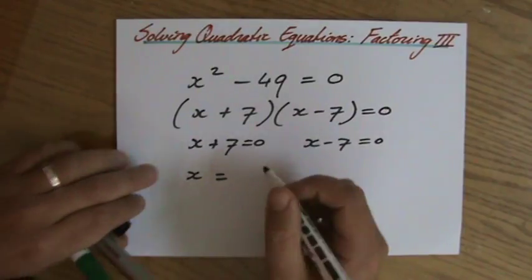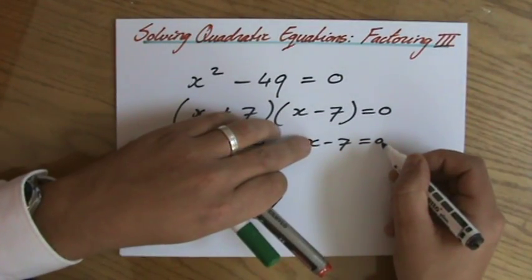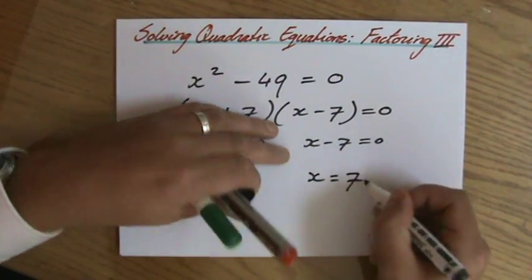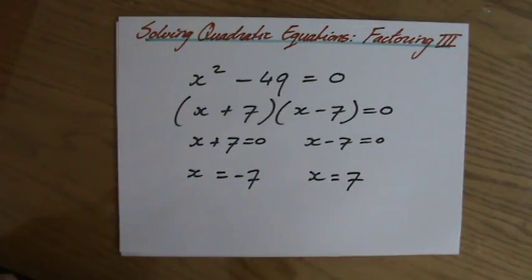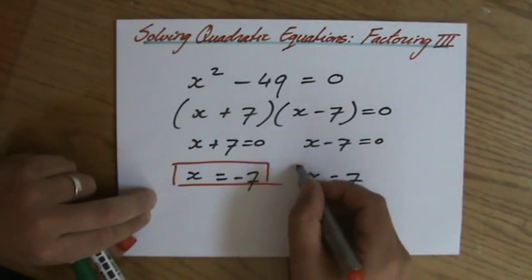So I have a look at this linear equation, x equals minus 7. I have a look separately at that linear equation, x equals 7. So those are my two solutions: x equals minus 7 and x equals 7.